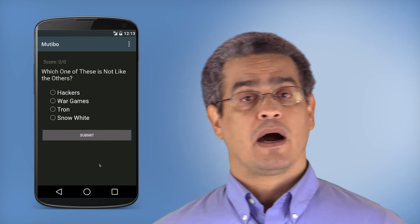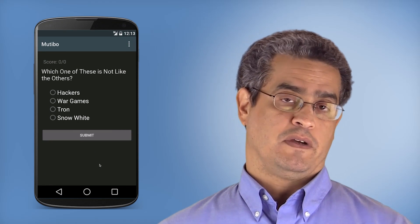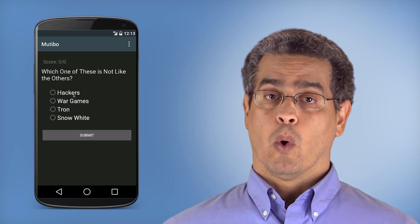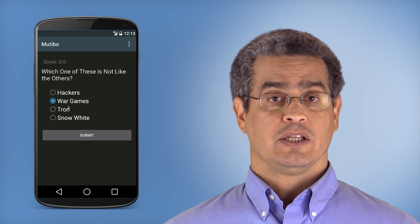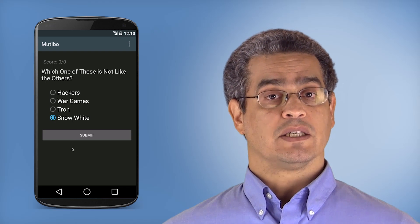For example, in this mock-up of a Mutibo app, the user is being shown the following four movie titles: Hackers, War Games, Tron, and Snow White, and the user might select any one of these titles to be the one that doesn't belong.